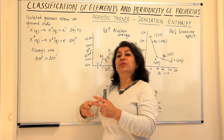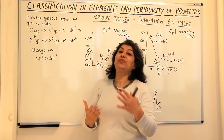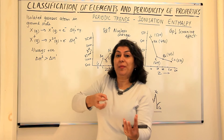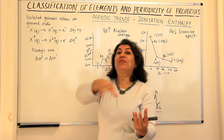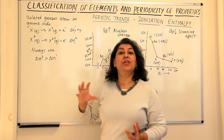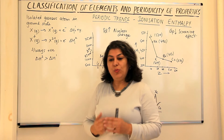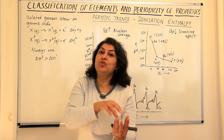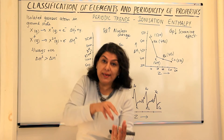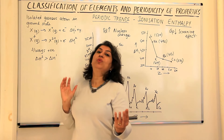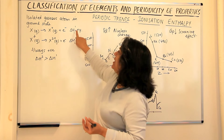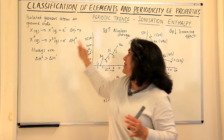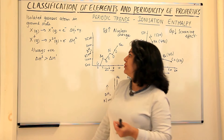Whenever we have to remove an electron from an atom, we are overcoming the attraction of the nucleus for the electron and pulling it out. So ionization enthalpy is always positive. An enthalpy or energy is positive when we provide energy to a system to carry out the process. Since you are adding energy, the energy is always positive. Ionization enthalpy always has a positive sign, which means you have to provide this energy to carry out this change.